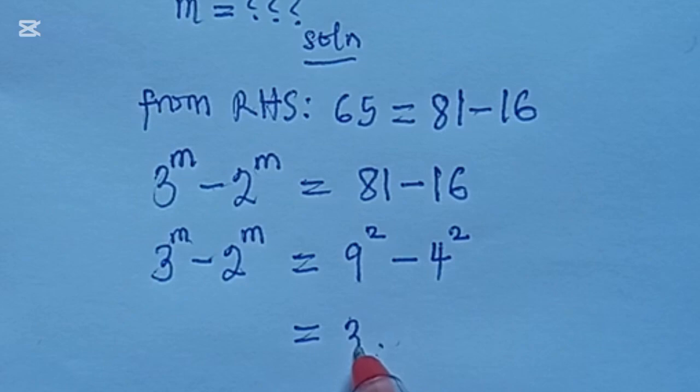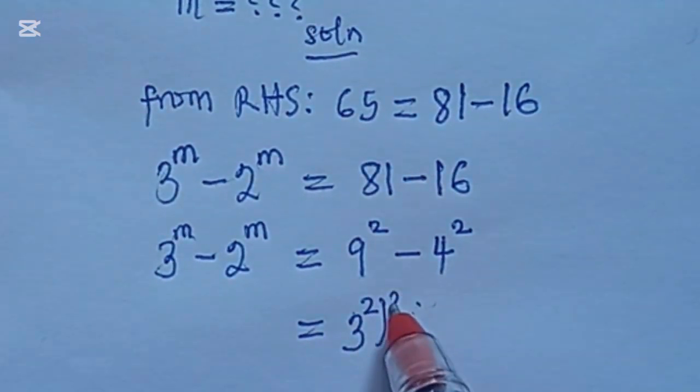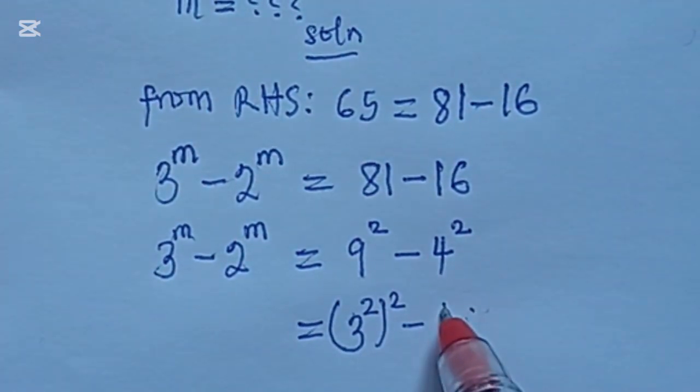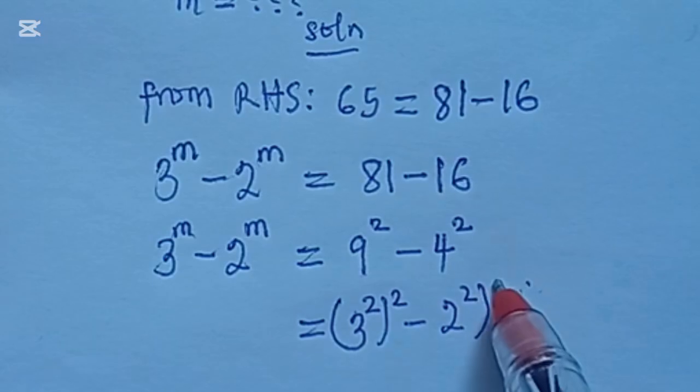So we can write this again as 3 to the power of 2 squared, then minus 2 to the power of 2 squared.